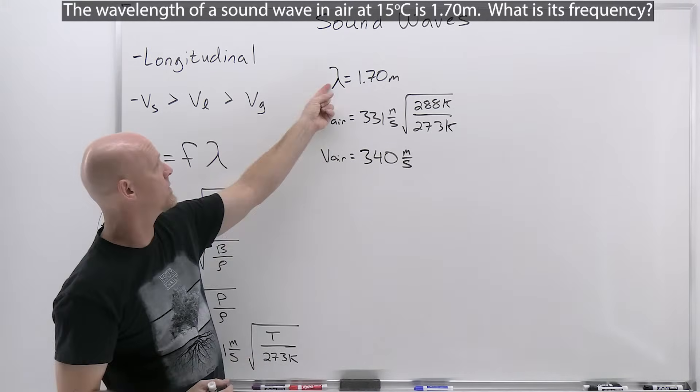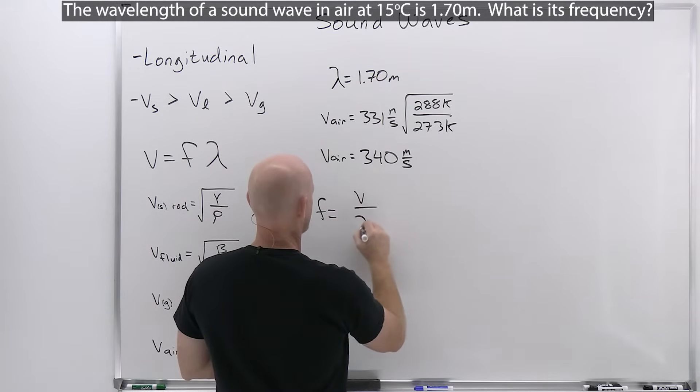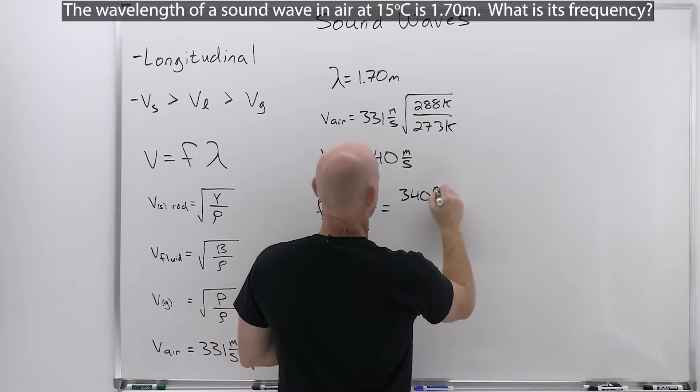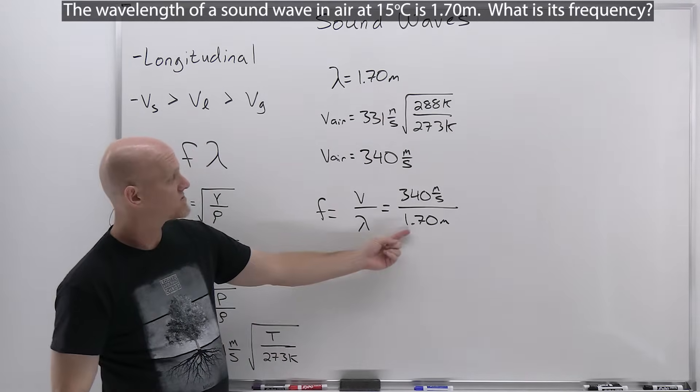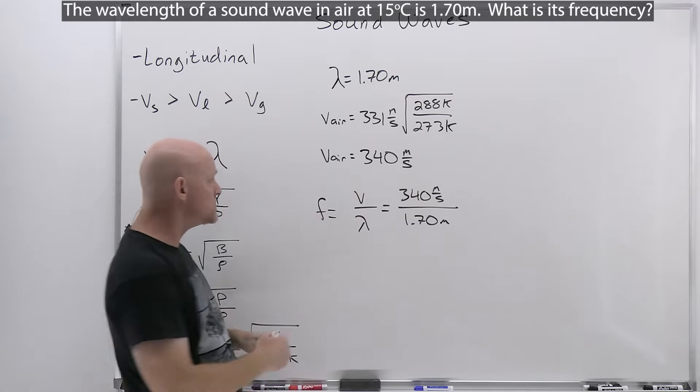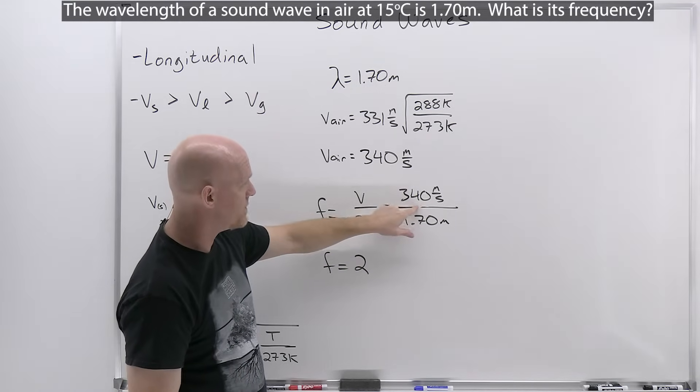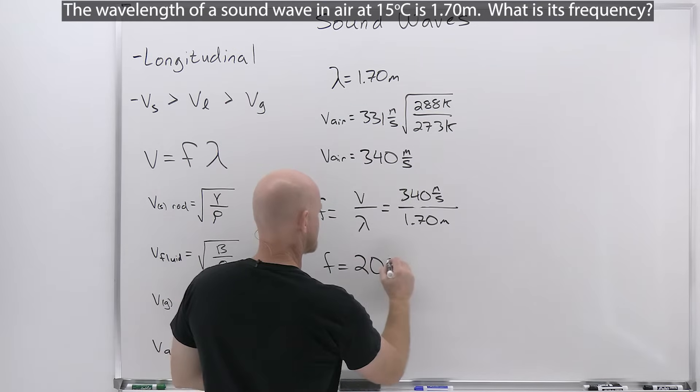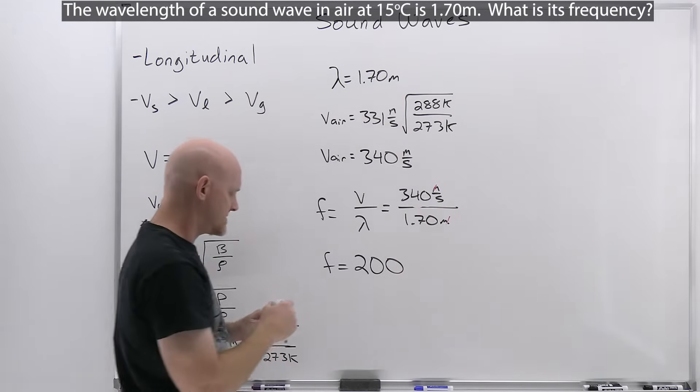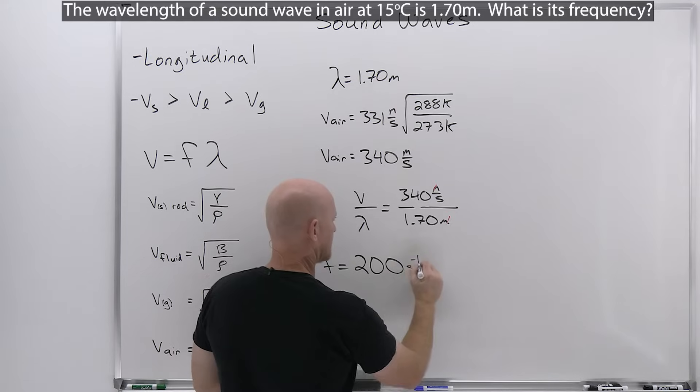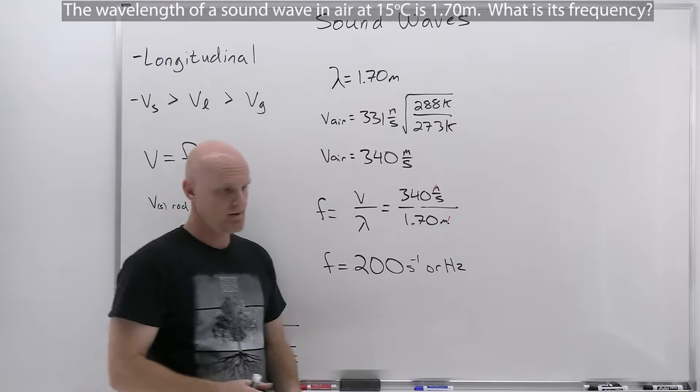Now that we have both the velocity and the wavelength, we can now solve for this frequency, and if we rearrange this to solve for that frequency, we can see that frequency is going to equal the velocity over the wavelength, which again is that 340 meters per second over the 1.7 meters, and I chose the numbers here to make it nice, because 1.7 goes into 3.4 exactly two times, and in this case then, add a couple extra zeros, because I was saying it was 3.4, but I had to backtrack a little bit, so the frequency here is going to be 200. Now, what are the units on this? Well, we see here the meters are going to cancel, and you're going to have 200 per second, which again is a hertz, and so the frequency of this sound is 200 hertz.